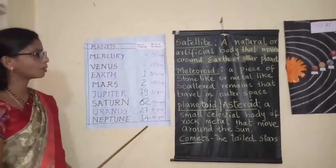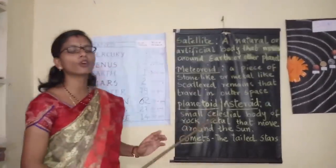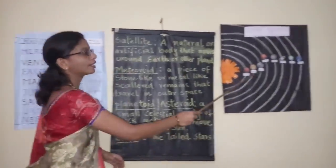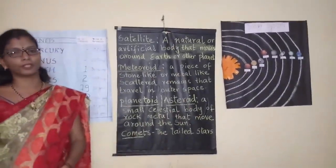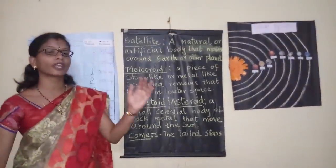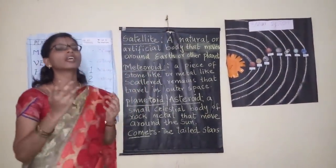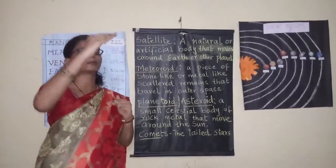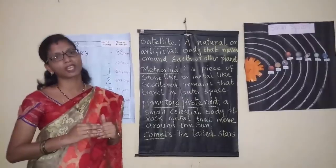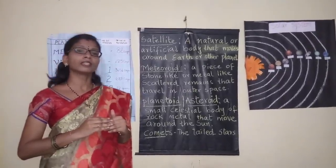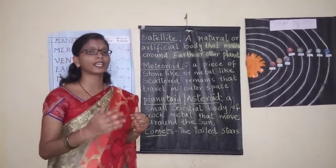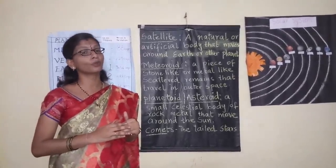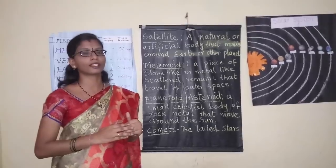These are the number of moons which revolve around the different planets. I have mentioned the atmosphere — the layer of air that surrounds the earth is known as atmosphere. The region beyond the atmosphere is known as space. The people who travel to space are known as astronauts. The vehicle which they use to go into space is known as the spacecraft.